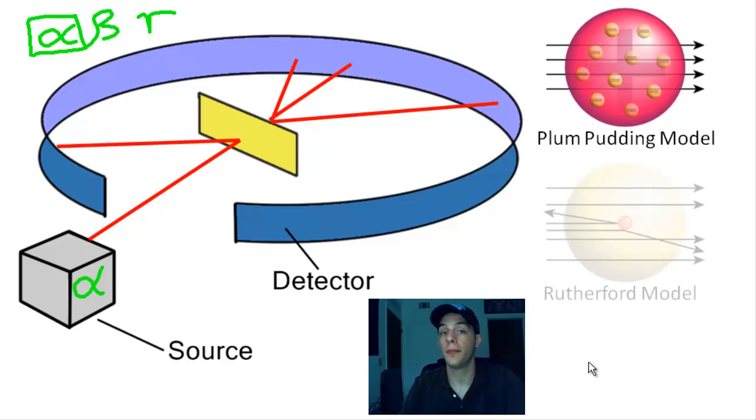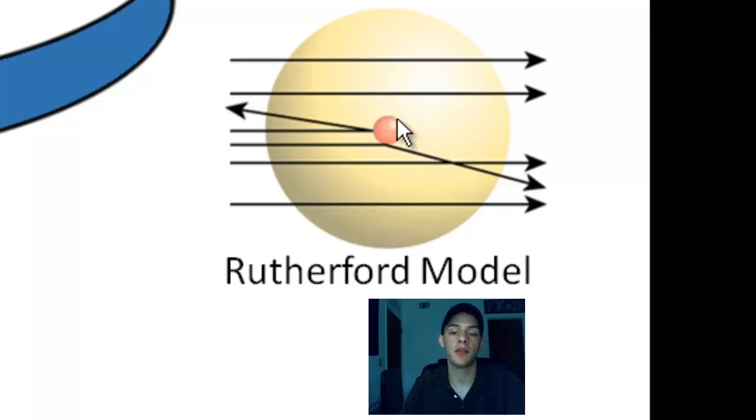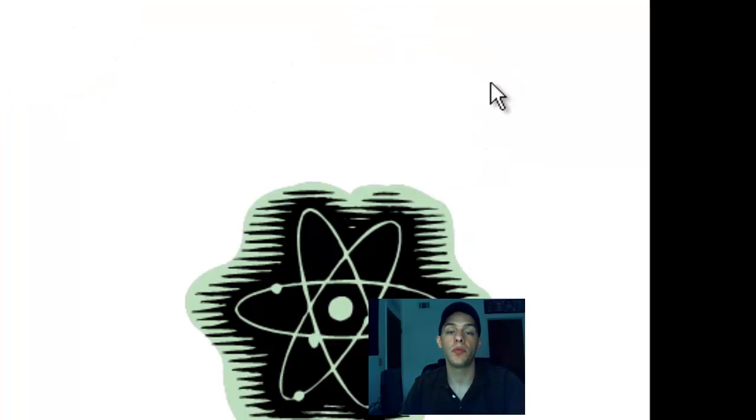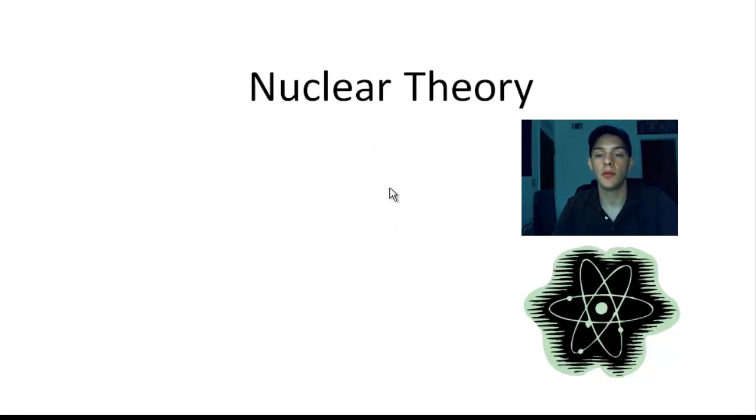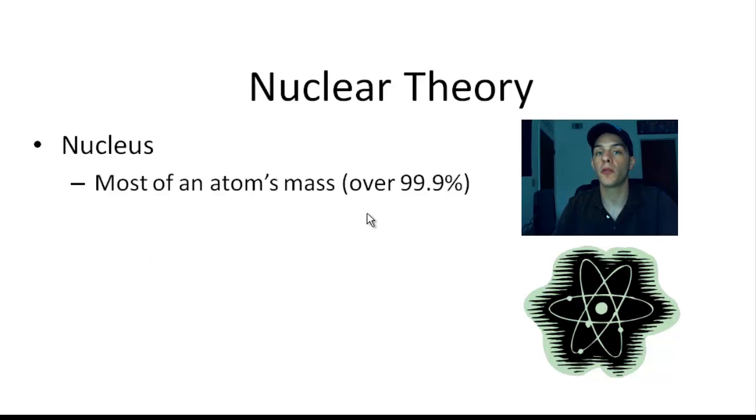So they developed what was called the Rutherford model. In the Rutherford model, you have this very small by-volume region in the center of the atom that contains almost all of the mass and all of the positive charge. And then around that, you have basically this empty space in which these nearly massless electrons are suspended. This Rutherford model gave birth to what is now called nuclear theory. It was first published by Rutherford and he said that basically what you have is a nucleus. You have this small central region that has most of an atom's mass. When I say most, I'm talking about over 99.9% of an atom's mass. Electrons are nearly massless. And it also has all of an atom's positive charge.